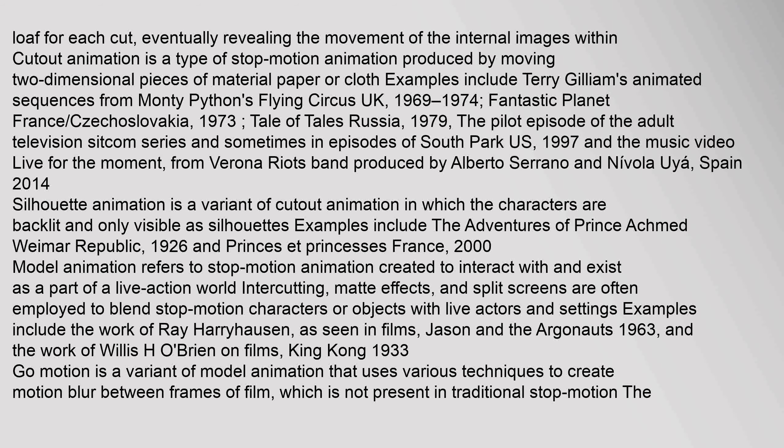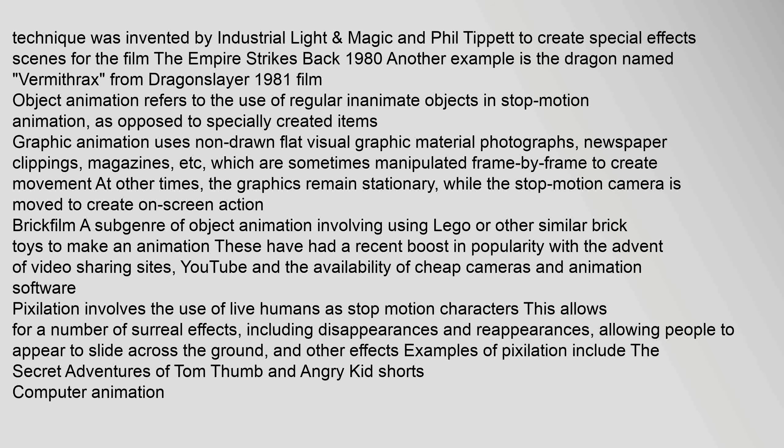Cutout animation is a type of stop motion animation produced by moving two-dimensional pieces of material such as paper or cloth. Examples include Terry Gilliam's animated sequences from Monty Python's Flying Circus (1969–1974), and Fantastic Planet (France/Czechoslovakia, 1973).